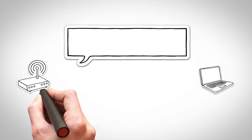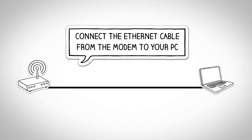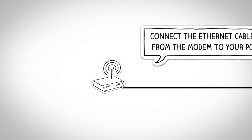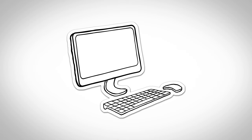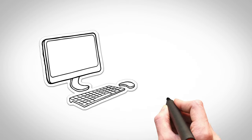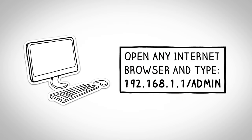Once you've connected all three devices, you'll need to open an internet browser, such as Internet Explorer, Firefox, or Safari. In the address bar, you will type 192.168.1.1/admin.